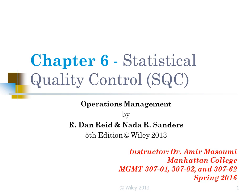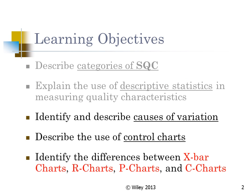Welcome to Chapter 6 of Operations and Quality Management. The title of this chapter is Statistical Quality Control, or SQC. This is the second chapter on quality management. In Chapter 5 we covered Total Quality Management (TQM), the TQM philosophy, and reliability calculations including series versus parallel layouts.